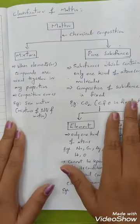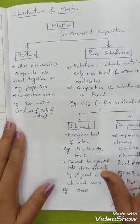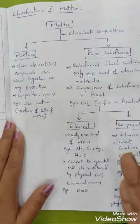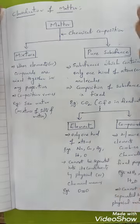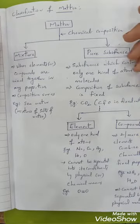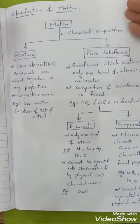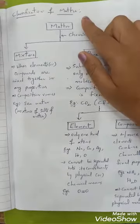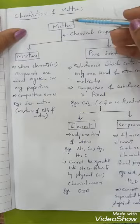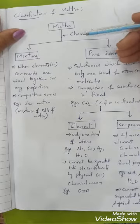Matter is anything present in the universe which has some mass and occupies some space. Chemistry deals with the composition, properties, and changes that occur in matter. So we need to know what matter is and how many types of matter are present in nature. In this video I am going to explain about classification of matter.